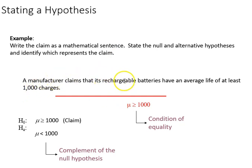The claim that rechargeable batteries last a thousand charges or more suggests that the mu, the average, is greater than or equal to a thousand, so that is the claim. You notice that the equal sign is part of the more than or equal to, so that's going to be the null hypothesis. Remember the alternative does not contain equality, so in this case the complement is going to be mu is less than a thousand recharges.